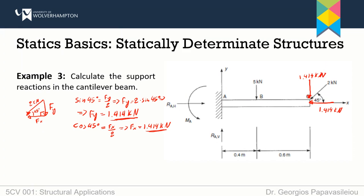At this point, we have only horizontal and vertical forces. Please don't forget that you also have a moment here. We can apply the equations of equilibrium to calculate all support reactions. In cantilever beams, it's even easier than in simply supported beams, because regardless of which equation of equilibrium we select, it is possible to calculate one unknown variable at a time — so it's a bit faster.